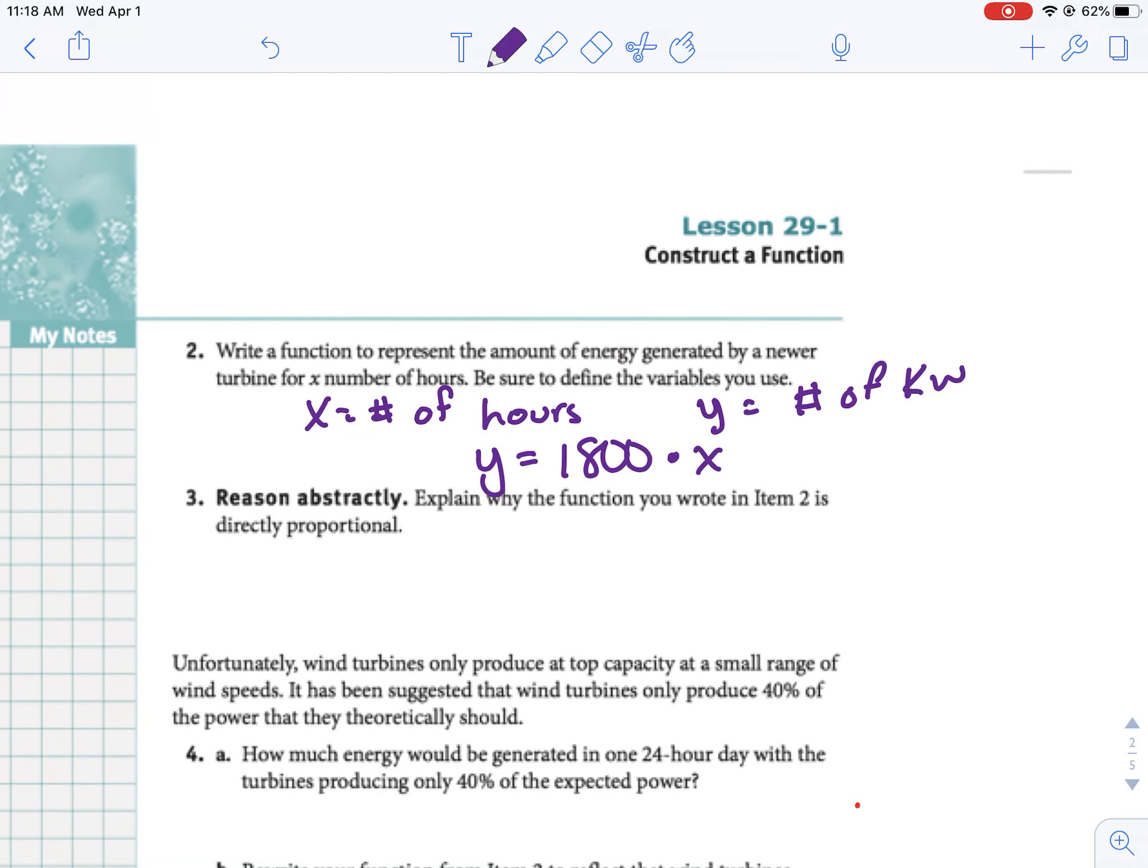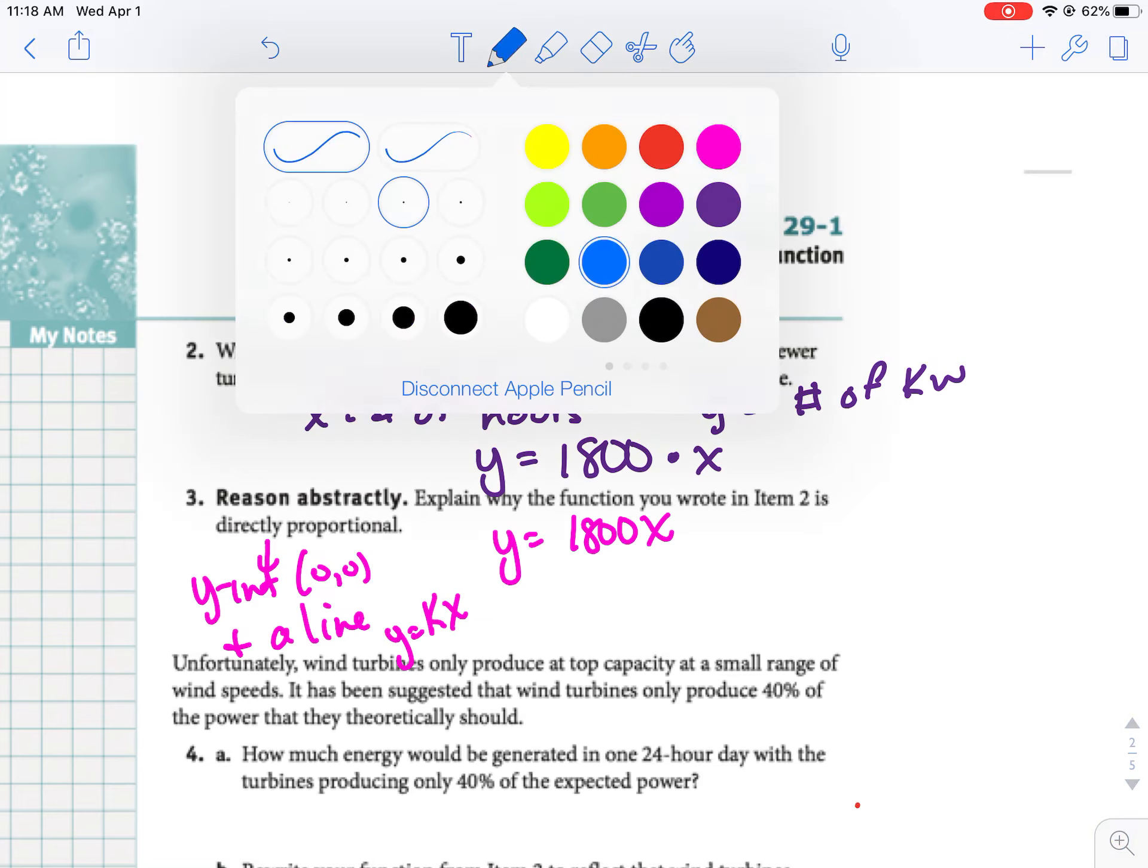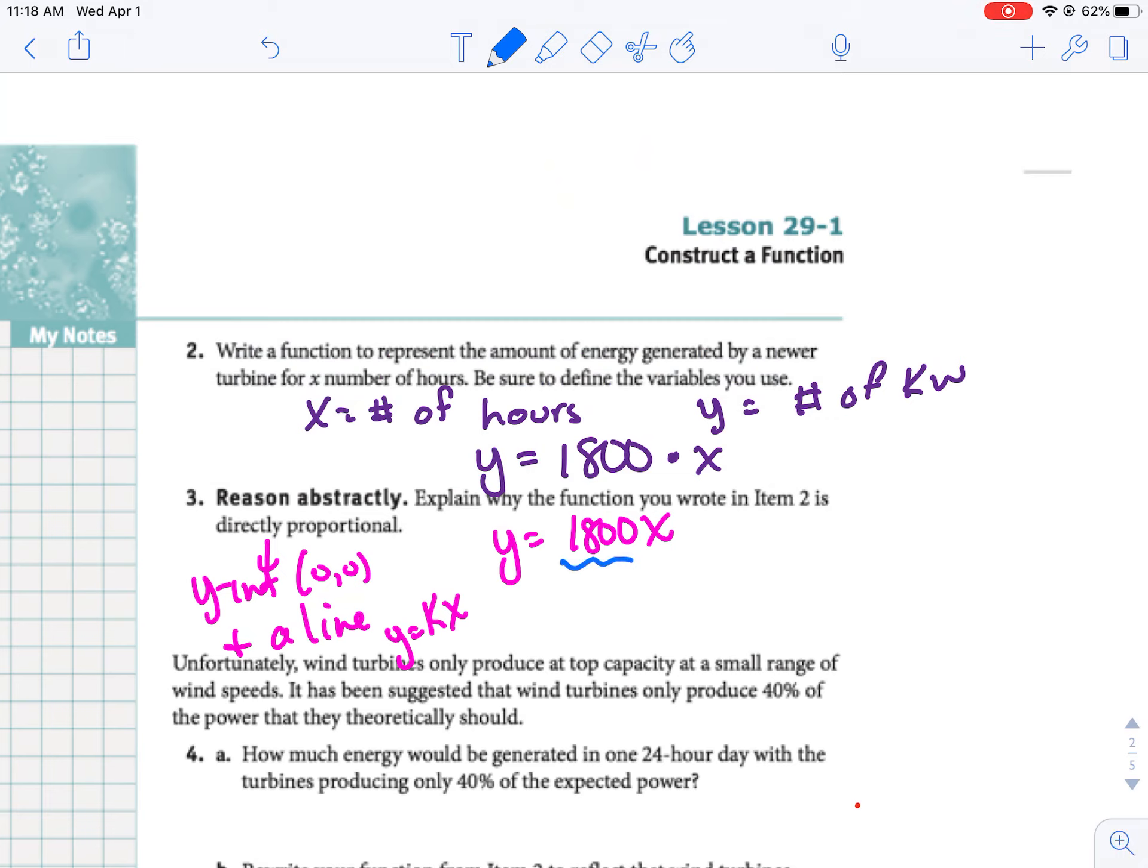Question three says, is this directly proportional? Remember that directly proportional, if we're looking at this equation y equals 1,800x, has to have a y-intercept of 0,0, and it has to be a line. Sometimes they say it's in the form y equals k times x, which this one is. Our k value is represented by that 1,800, or we could just look and there's a plus 0 at the end, so yes, it's directly proportional.